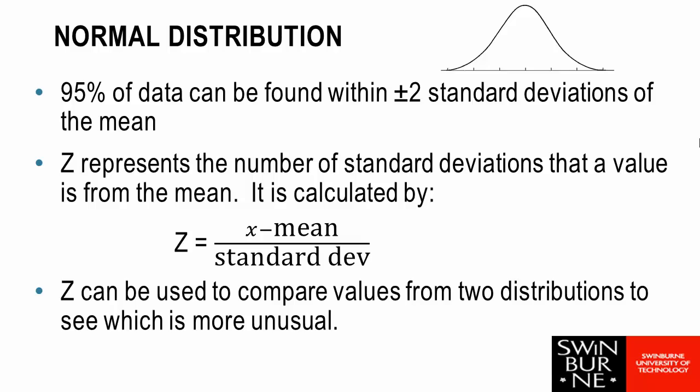In this video, we will be looking at the normal distribution. The normal distribution is a symmetric bell curve shape where 95% of the data can be found within two standard deviations above or below the mean.